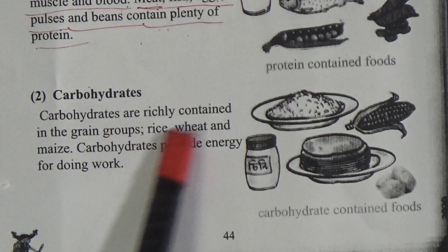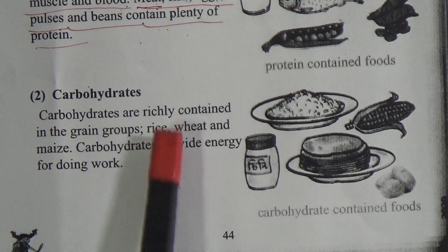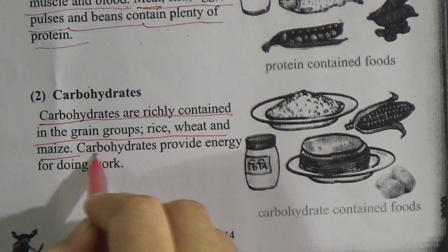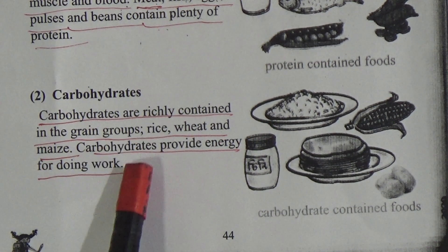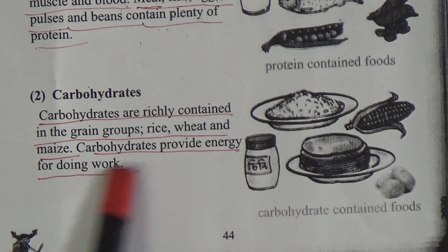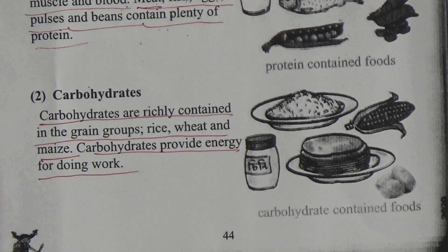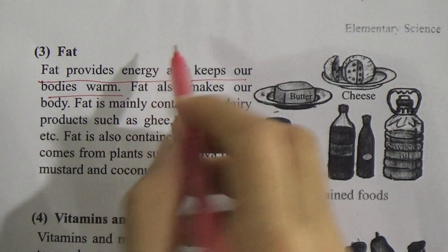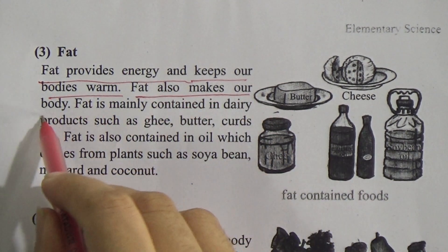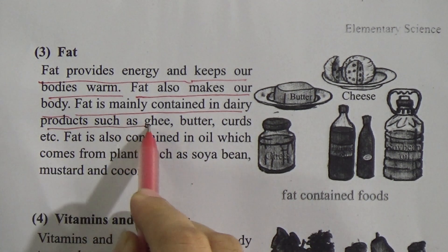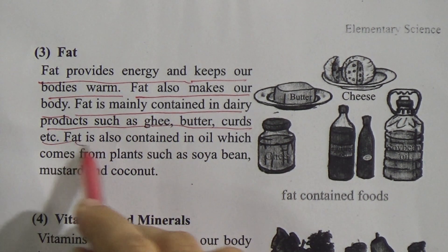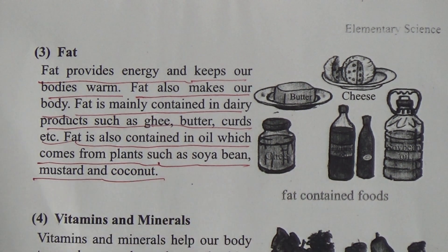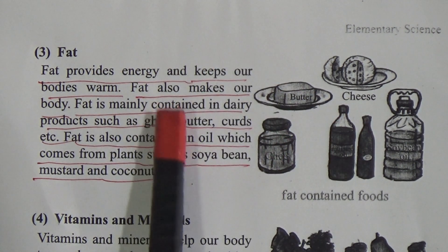Carbohydrates are richly contained in the grain group — for example, rice, wheat, and maize. Carbohydrate provides energy for doing work — memorize this function properly. Fat provides energy and keeps our body warm. Fat is mainly contained in dairy products such as ghee, butter, and curd. Fat also comes from plant oils such as soybean, mustard, and coconut.